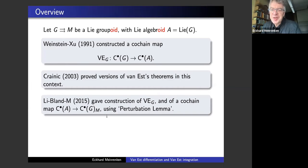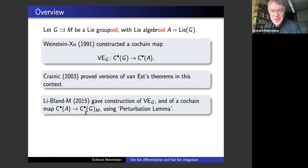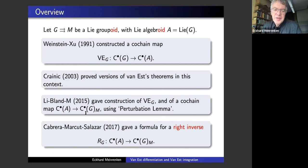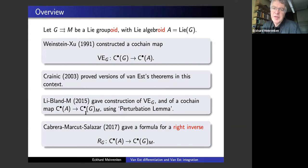We also briefly mentioned that you get a cochain map in the opposite direction — an integration map — though we didn't identify what this integration map actually is. We were quite interested when two years later, Alejandro Cabrera, Yunoud Makut, and Maria Salazar gave an explicit formula for a right inverse — not just a right inverse in homotopy, but a right inverse on the level of cochains. That I found very interesting.